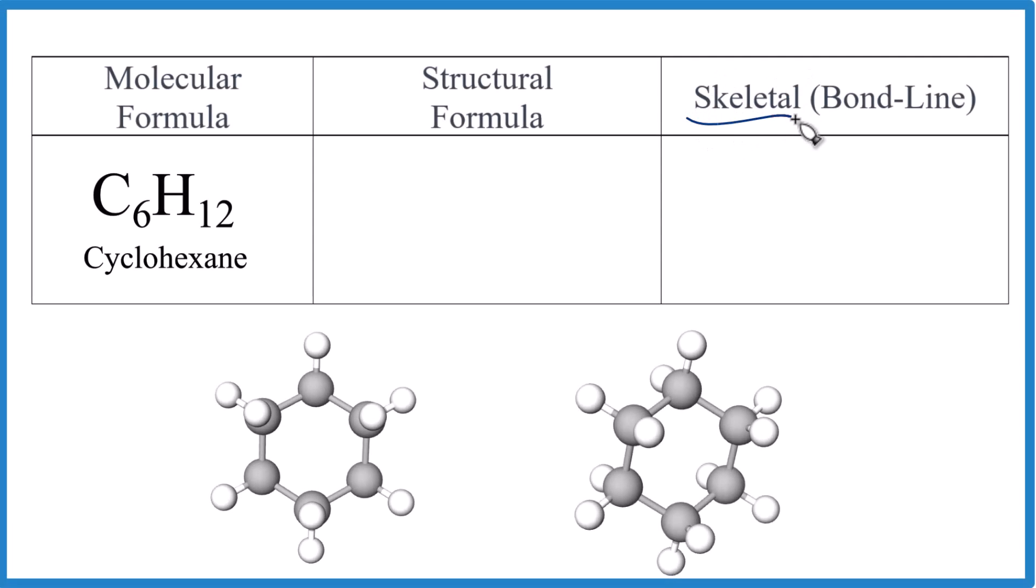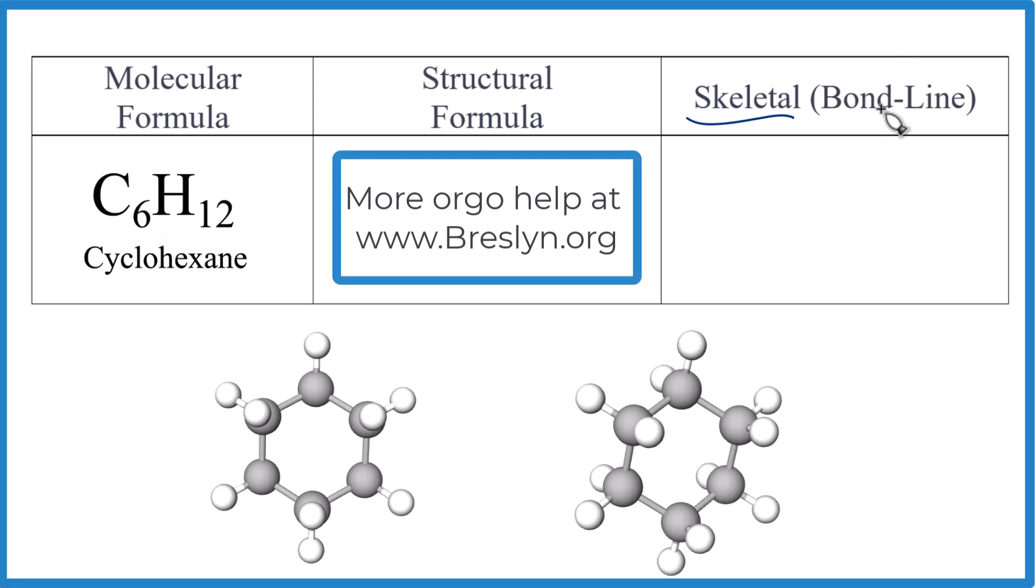So we're going to write the skeletal formula for C6H12. This is cyclohexane. It's also called the bond line formula. We'll do the structural formula too and look at the molecular formula.